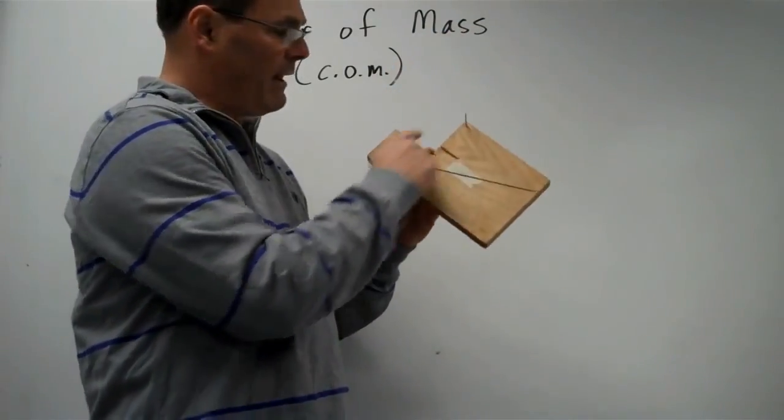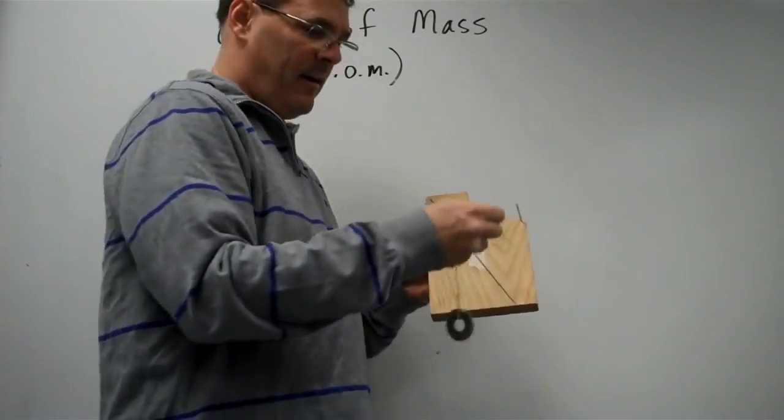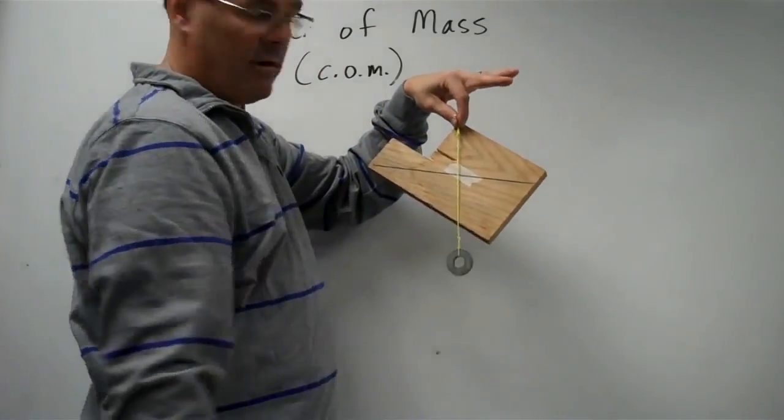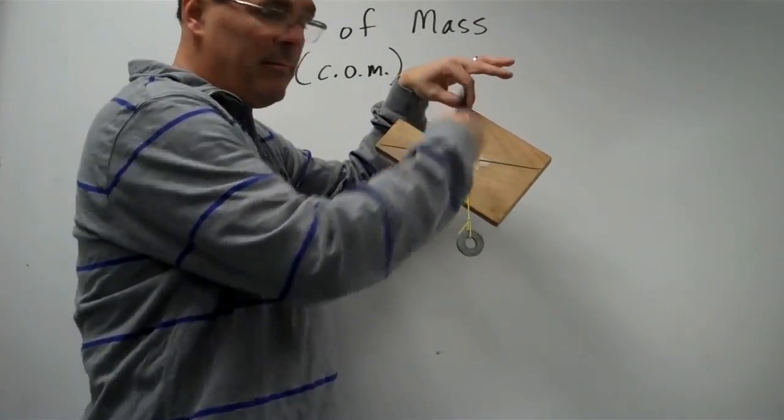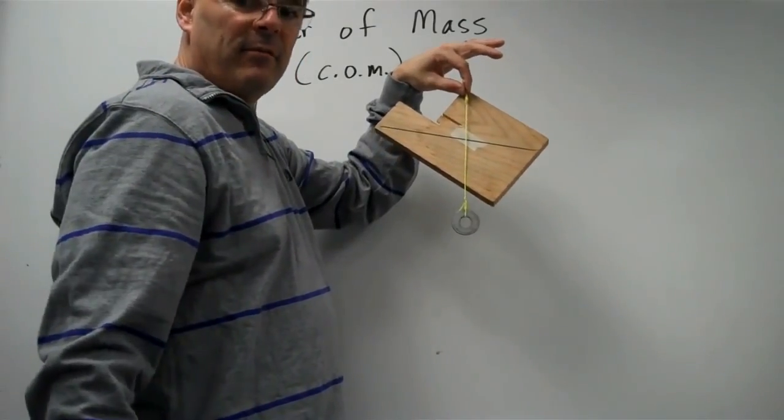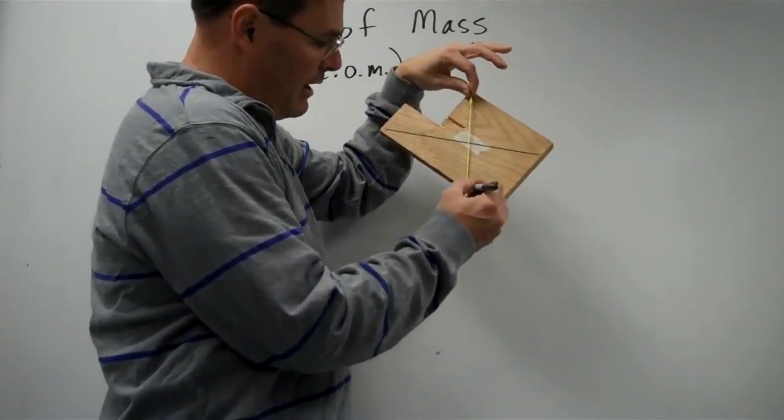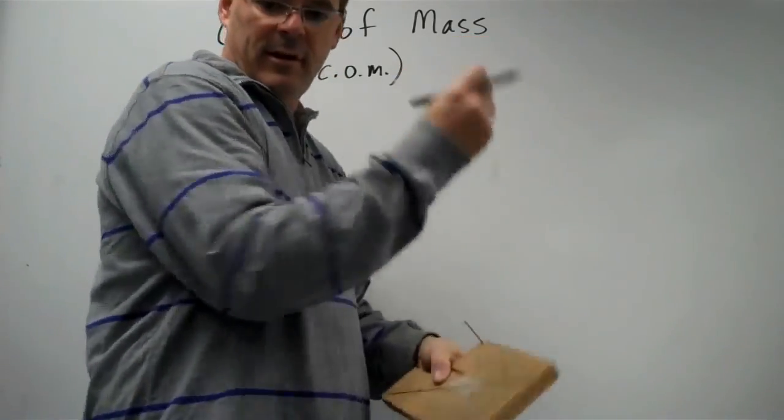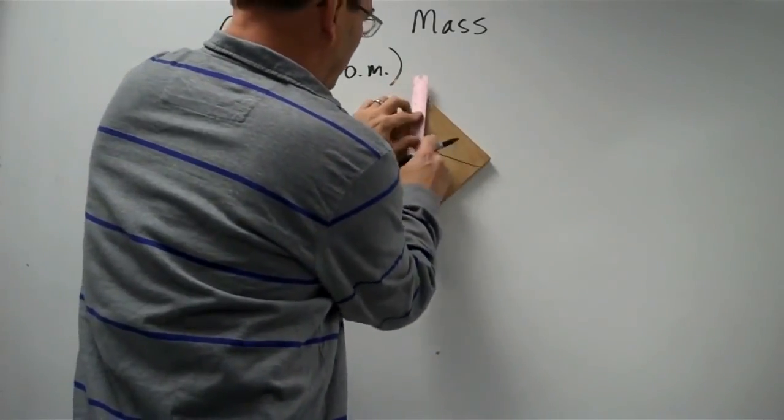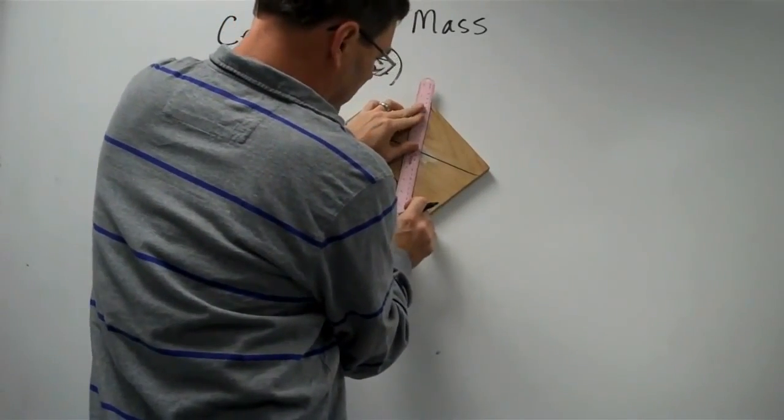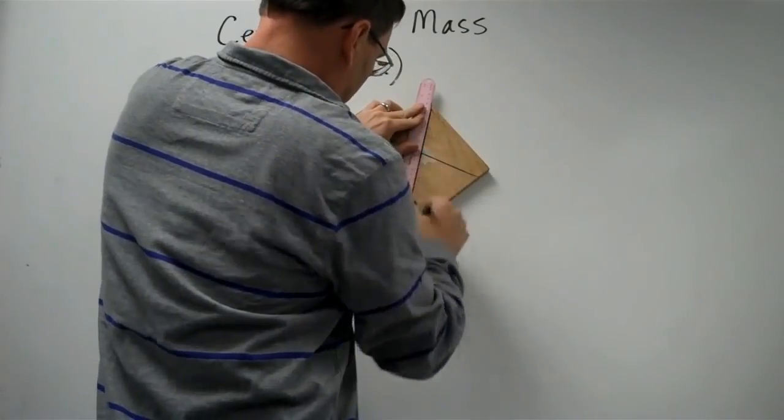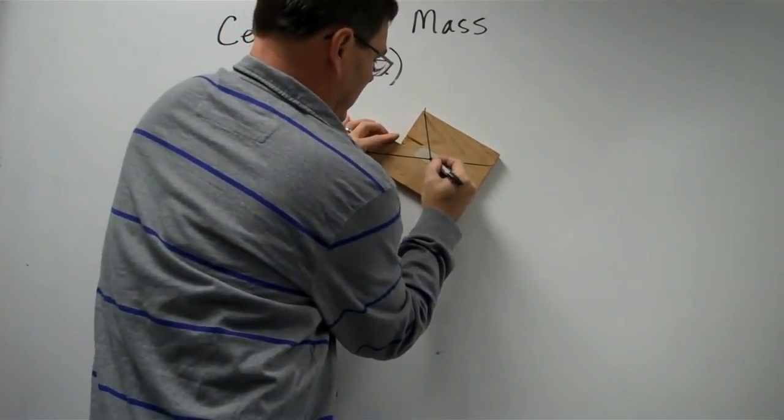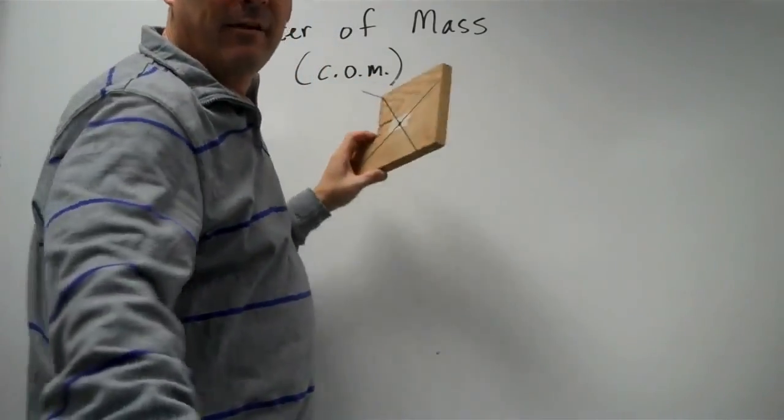Now I've moved the nail to another spot on the board. Again, I'll put my plumb bob on the nail, I'll hang the board from the nail, and I know that my center of gravity is somewhere on that vertical line. So I'll draw another dot where the line is. I'll connect the space between the nail and the dot with my ruler. And now I know where the lines intersect. That's going to be my center of gravity.